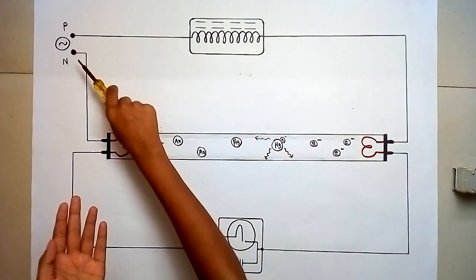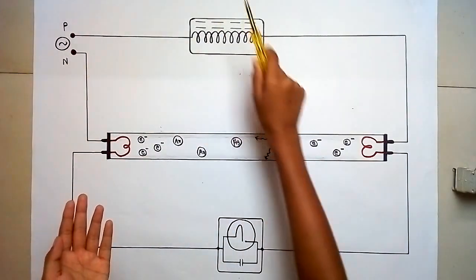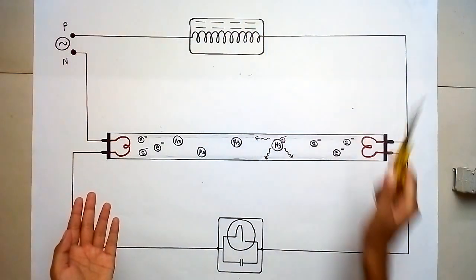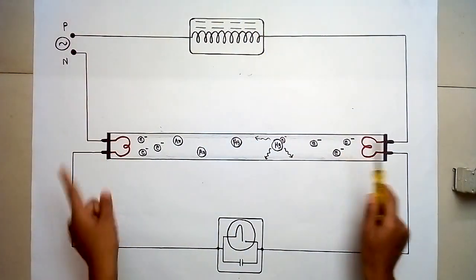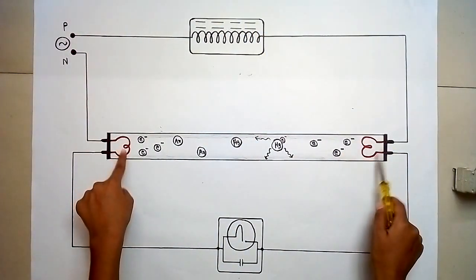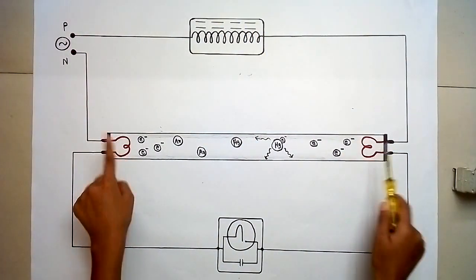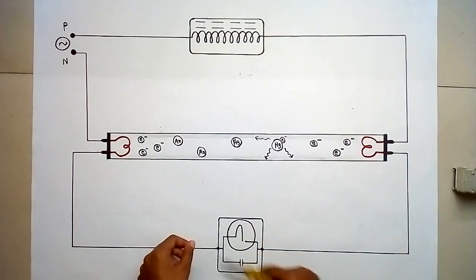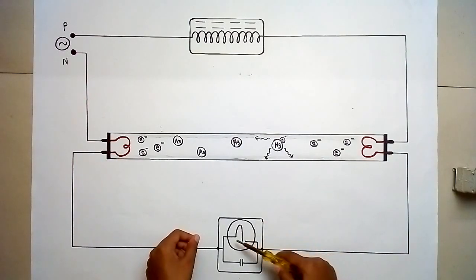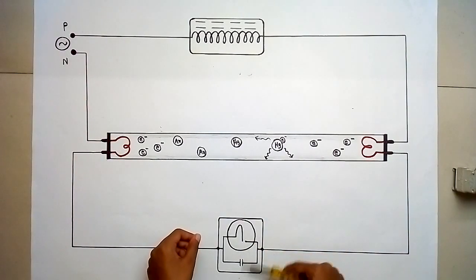Here is the AC power source, the magnetic ballast, a fluorescent lamp containing two tungsten filaments, and a starter having a bimetallic strip and a capacitor.